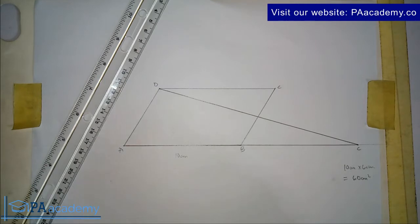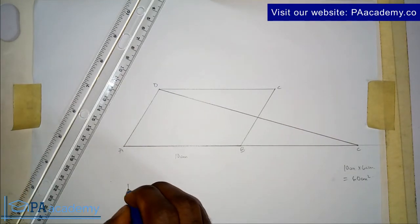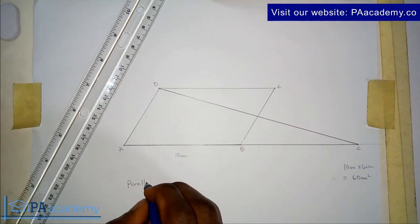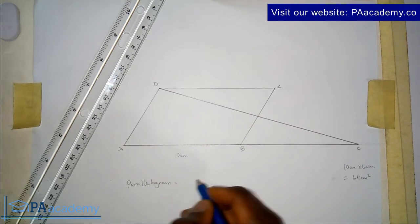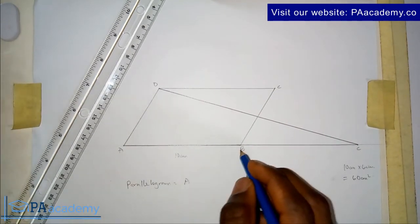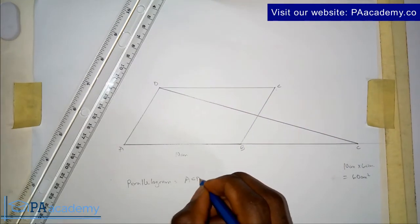So now with this, like I said, so this is the parallelogram. The parallelogram is ABCD.